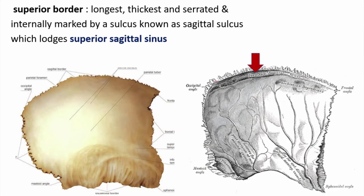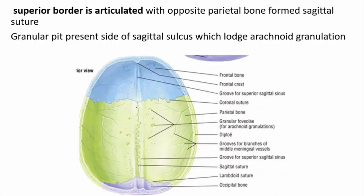The borders of the parietal bone: the superior border is already discussed — the longest, thickest, and serrated. Internally there is a groove which, united with the opposite parietal bone, forms the sagittal sulcus lodging the superior sagittal sinus. The superior border articulates with the superior border of the opposite parietal bone to form a fibrous joint — a sutural joint — forming the sagittal suture. Near the superior border some depressed areas are present, known as granular pits, which lodge arachnoid granulations.